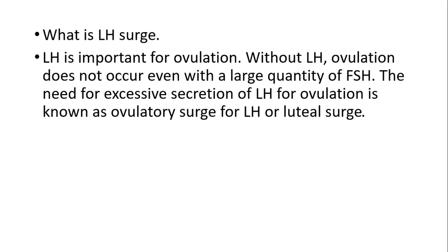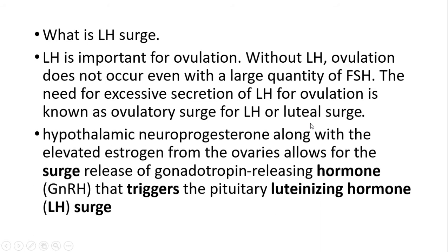What is the LH surge? LH is important for ovulation. Without the luteinizing hormone, ovulation does not occur even with a large quantity of FSH. The need for excessive secretion of LH for ovulation is known as the ovulatory surge of LH or LH surge. Hypothalamic neuroprogesterone along with elevated estrogen from the ovaries allow for the surge release of gonadotropin-releasing hormone, which triggers the preovulatory luteinizing hormone (LH) surge.